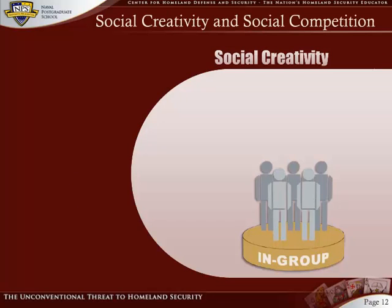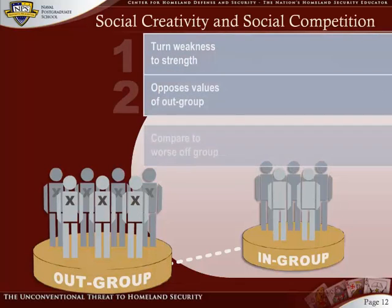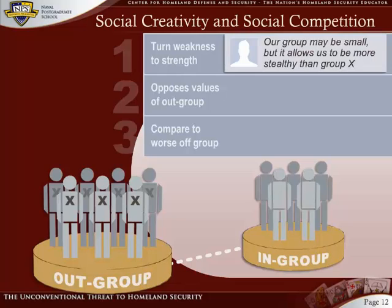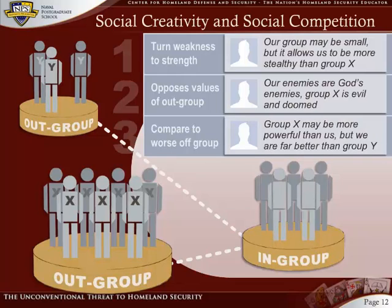Social creativity describes the in-group's effort to redefine and manipulate the premises of competition with the dominant out-group. It can entail any of the following three approaches: 1. Redefining the value of some existing comparison — turning a weakness into a strength. For example, our group may be small, but this allows us to be more stealthy than group X. 2. Introducing the idea that true positive values are, by definition, the opposite of those espoused by the out-group. For example, our enemies are God's enemies, therefore group X is not only evil, but also ultimately doomed. 3. Comparing itself to another, worse-off out-group, thereby looking more favorable in comparison. For example, group X may be more powerful than us, but we are far better off than group Y.